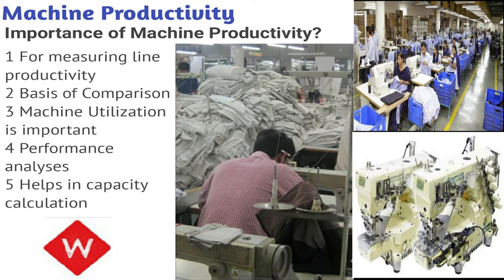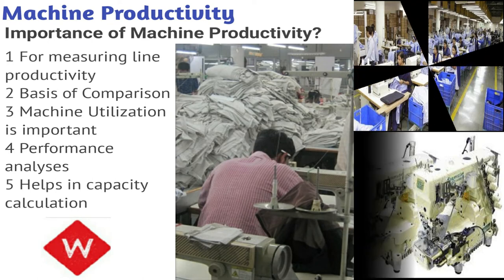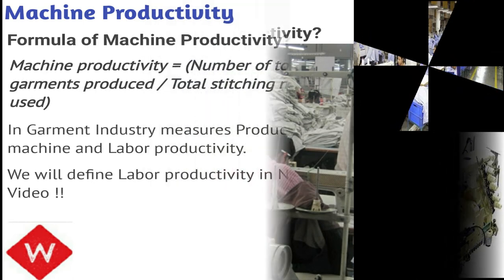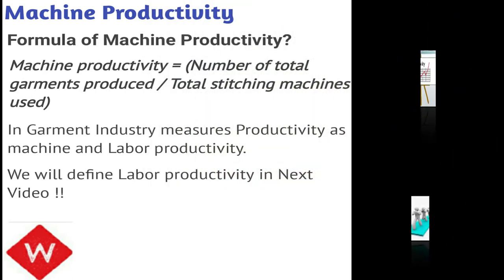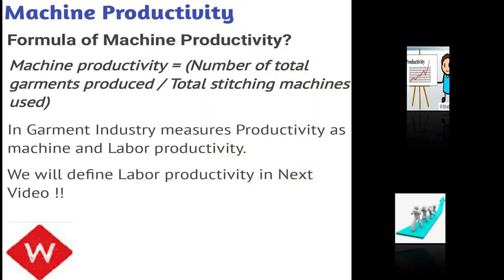Then you can see the machine performance analysis. Performance analysis and machine utilization are basically almost the same. If you have the utilization performance, you can compare which machine is under-utilized and which is over-utilized. In that case, you can develop a predictive maintenance plan, and then you apply the formula of machine productivity.